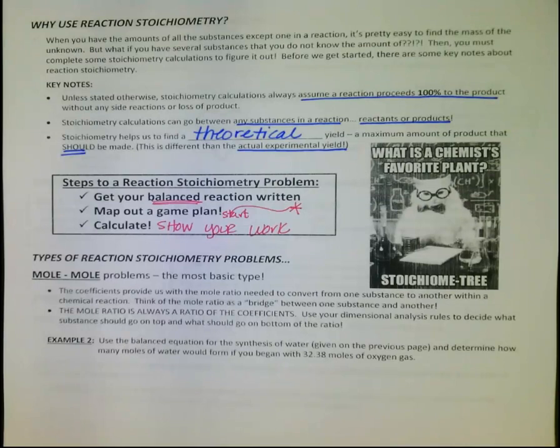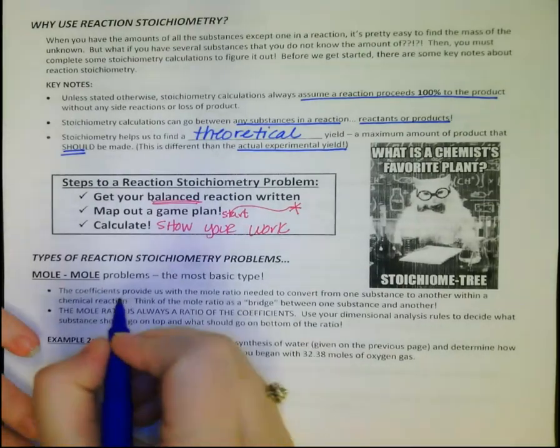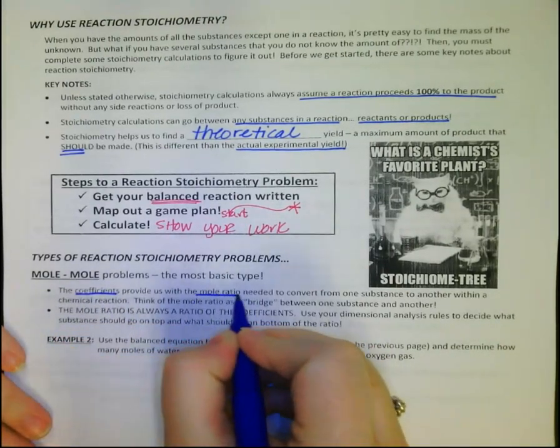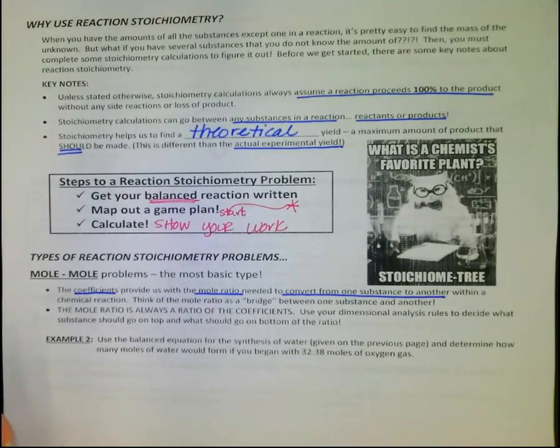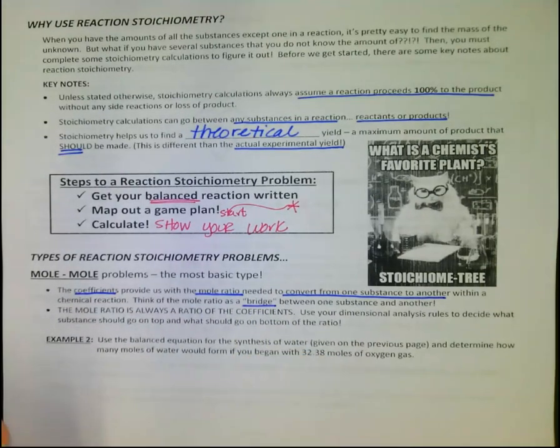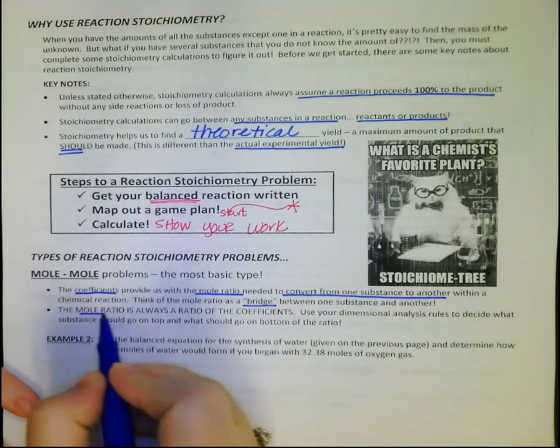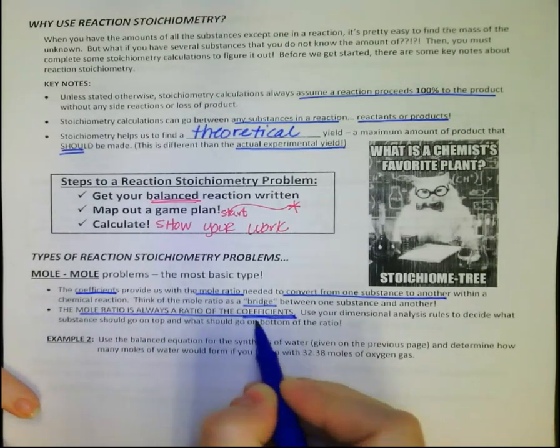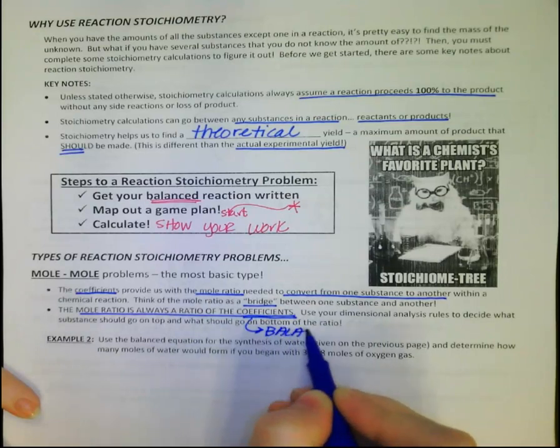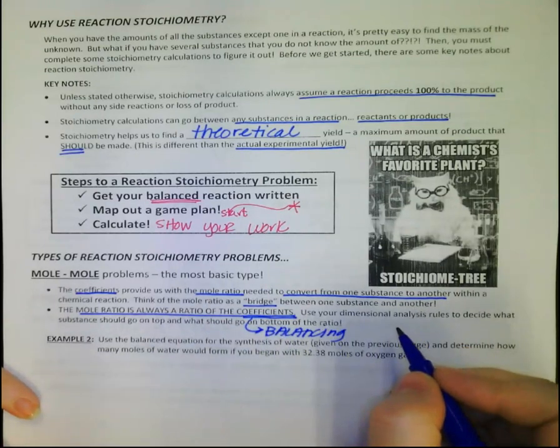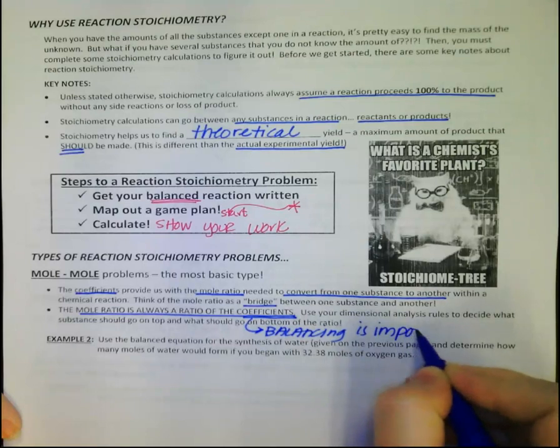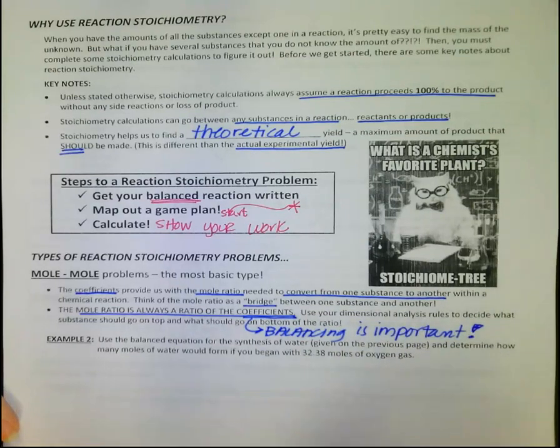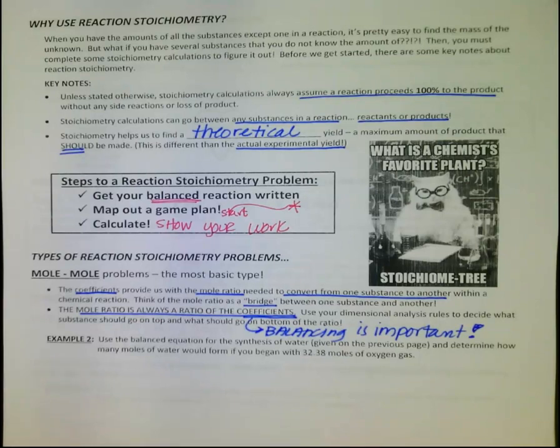There are several different kinds of stoichiometry problems. The first one, the most straightforward one, is just from moles to moles. The way that we work these problems is to use the coefficients. The coefficients will provide us a mole ratio to convert from one substance to another. It's basically the bridge, or it's how we get there. The mole ratio is always the ratio of the coefficients. This is why balancing is important. If you don't write your equation correctly and don't get it balanced correctly, now you're in trouble. We want to be really careful that we're writing exactly what the question says and balancing really carefully.